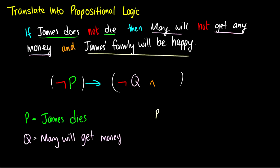And finally, James' family will be happy. So we can call this R, define this as James' family will be happy. And then finally, we can stick this into our last slot, R. So if not P, then not Q and R. And when we just have one statement on its own, we can just remove the brackets. So this says, if it is not the case that James dies, or if James does not die, then it is not the case that Mary will get money and James' family will be happy.